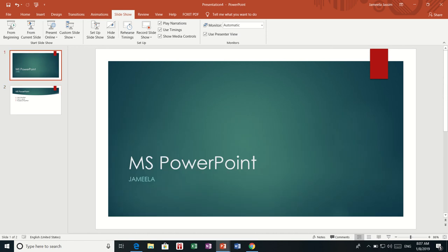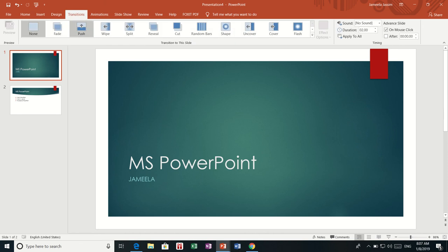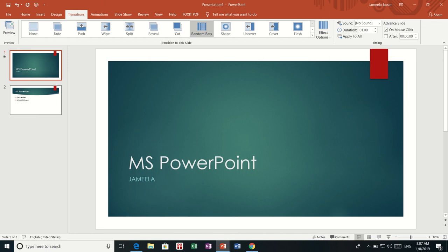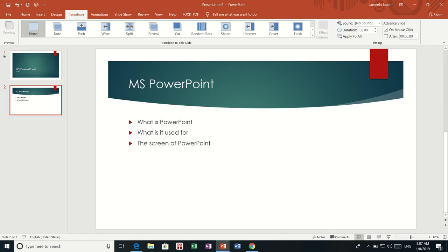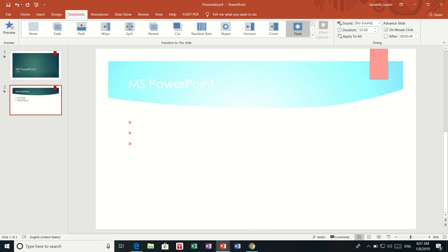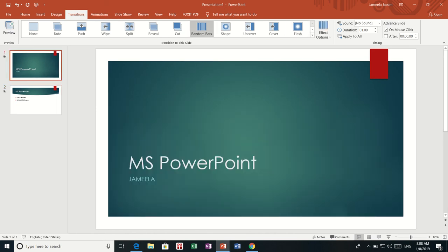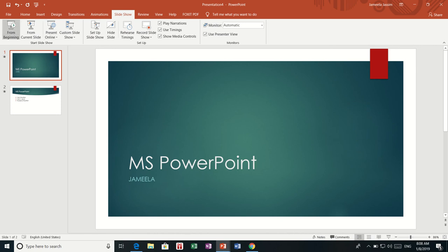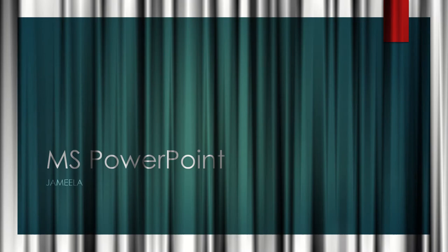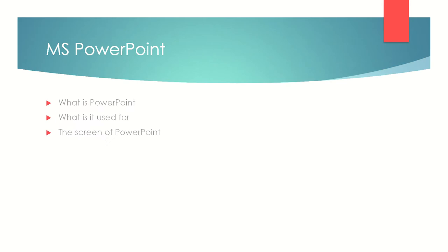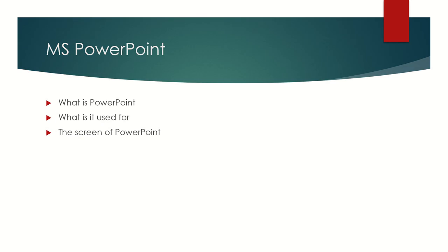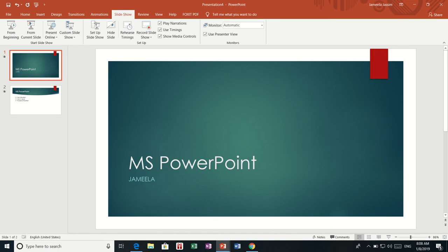I am going to return to my screen and add transitions. For the first slide, I am going to make it a Random Pause. For the second slide, I am going to make it a Flash. Then I will click Slideshow again and, from the beginning, you can see it plays with transition. The second slide also has a transition. We can make more things next time.